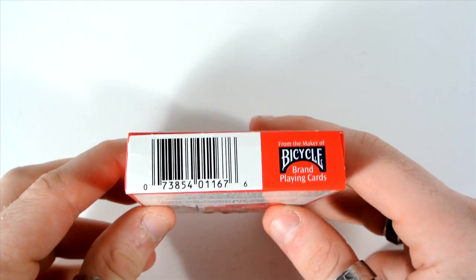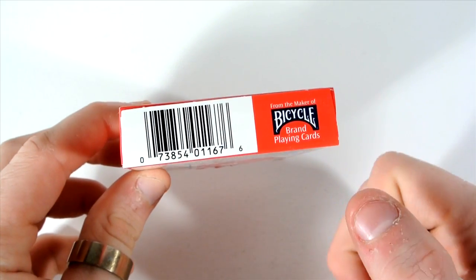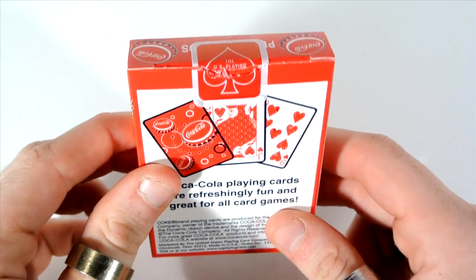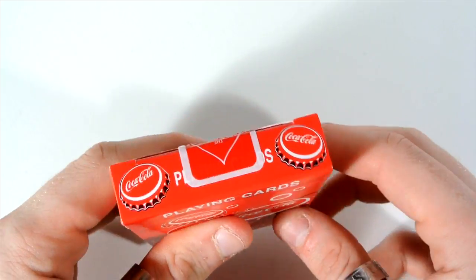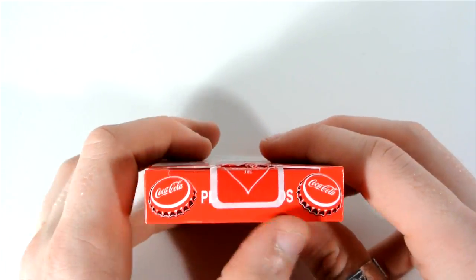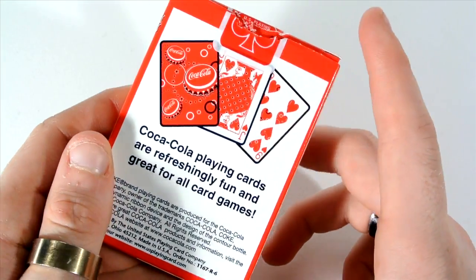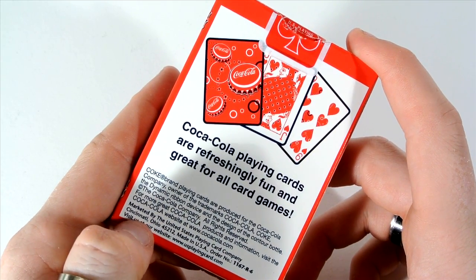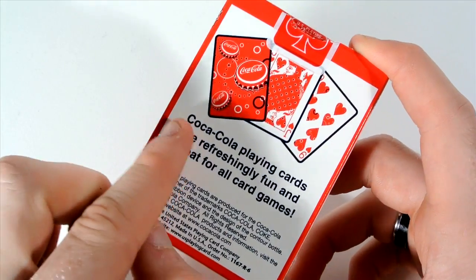It has on the bottom a white barcode and it says from the makers of bicycle branded playing cards. On the top it has a red USPC seal, so very cool there. And it has two bottle tops and playing cards on top.